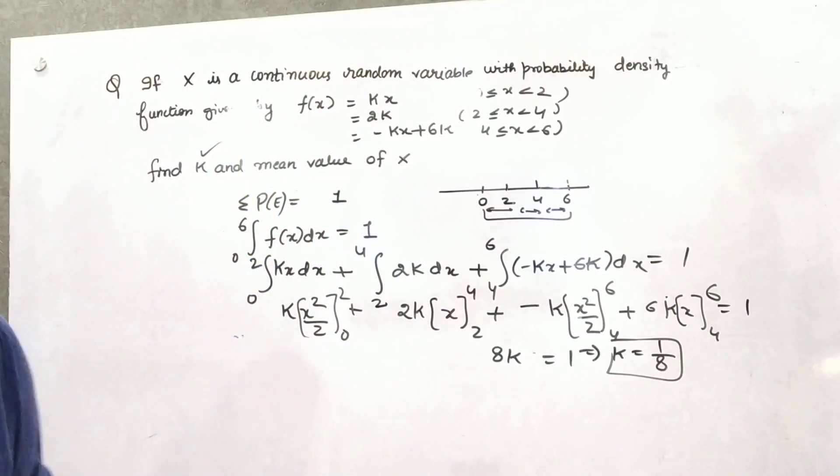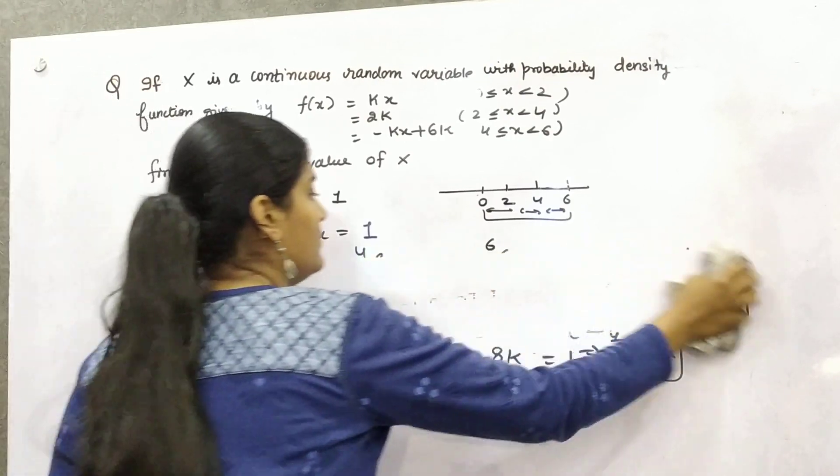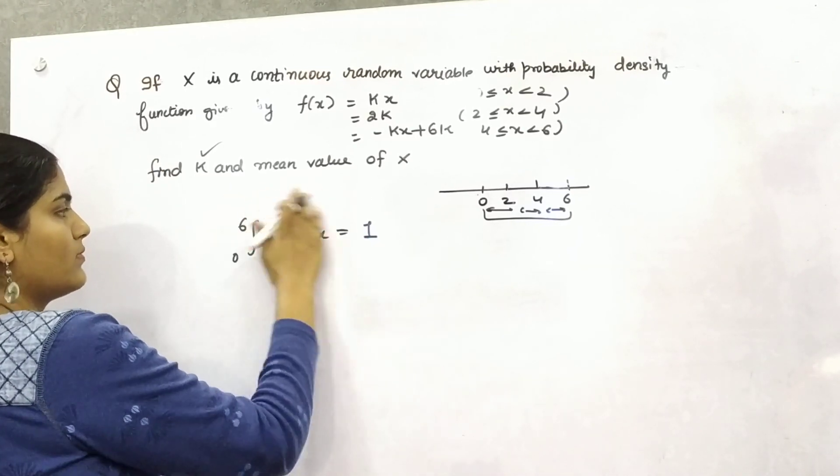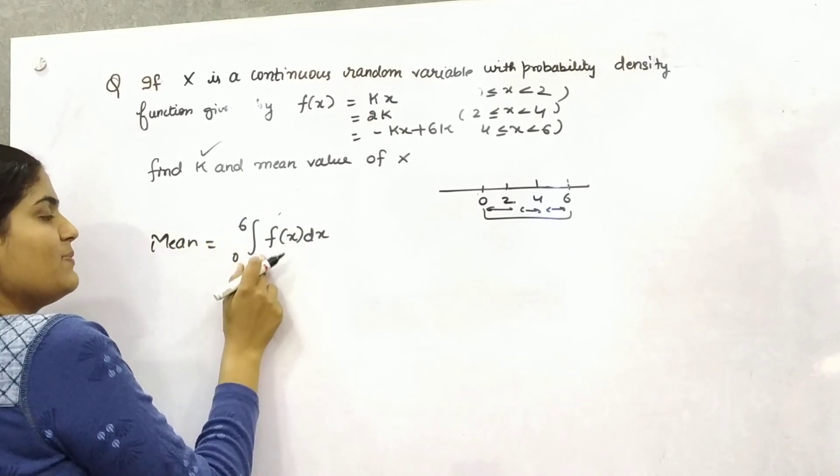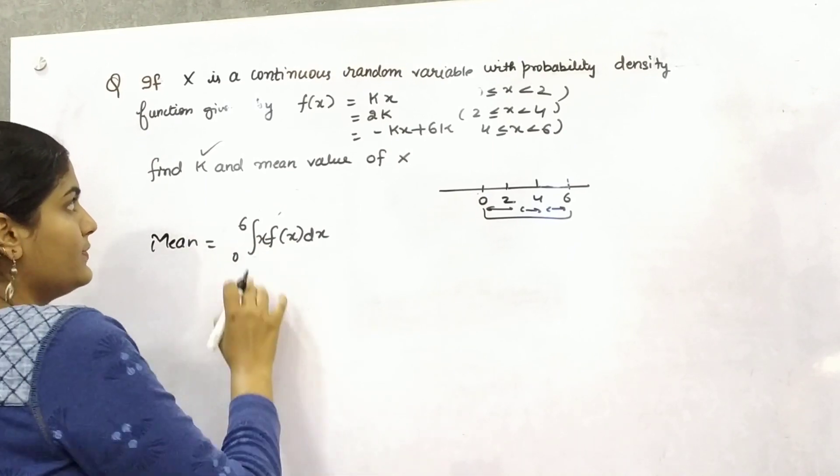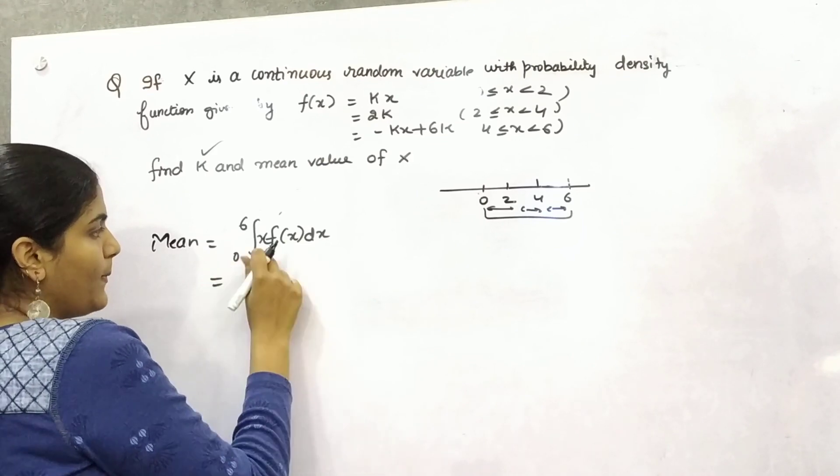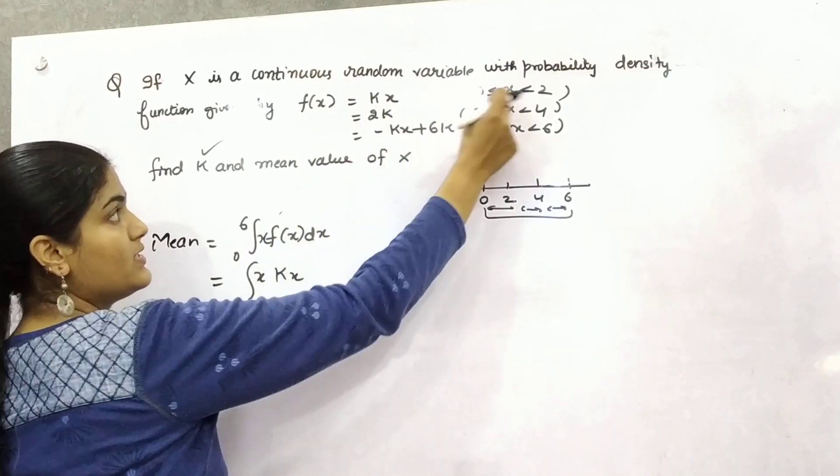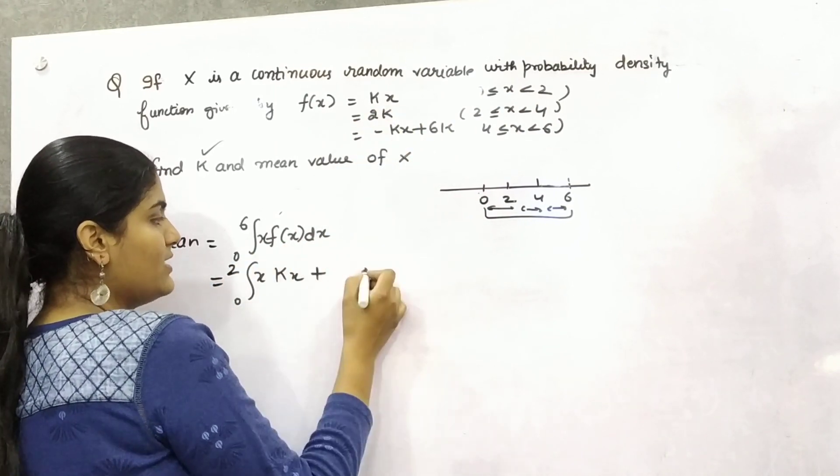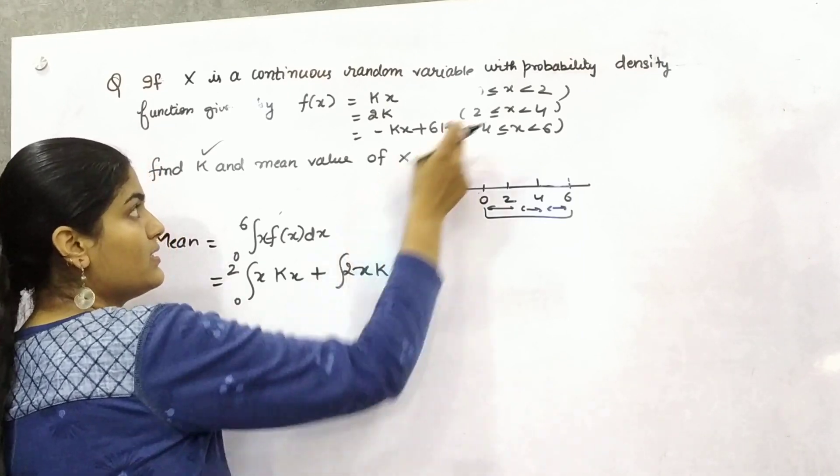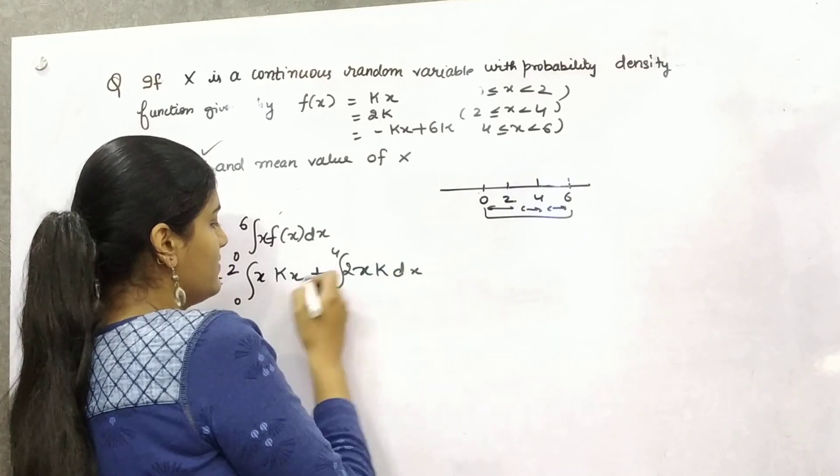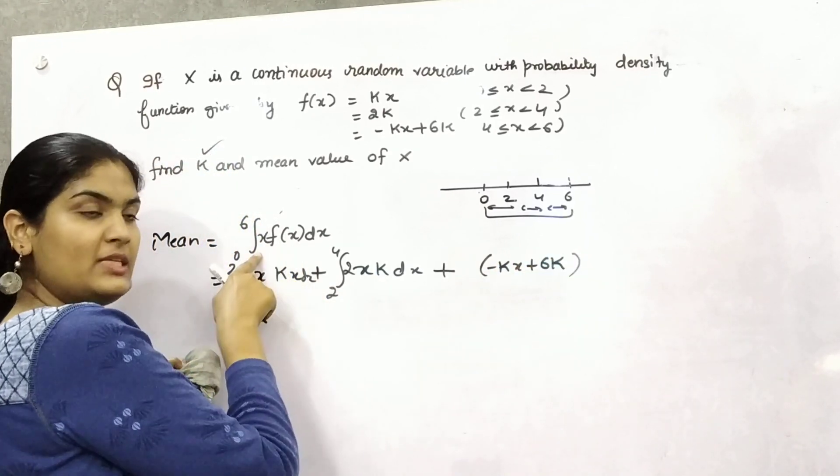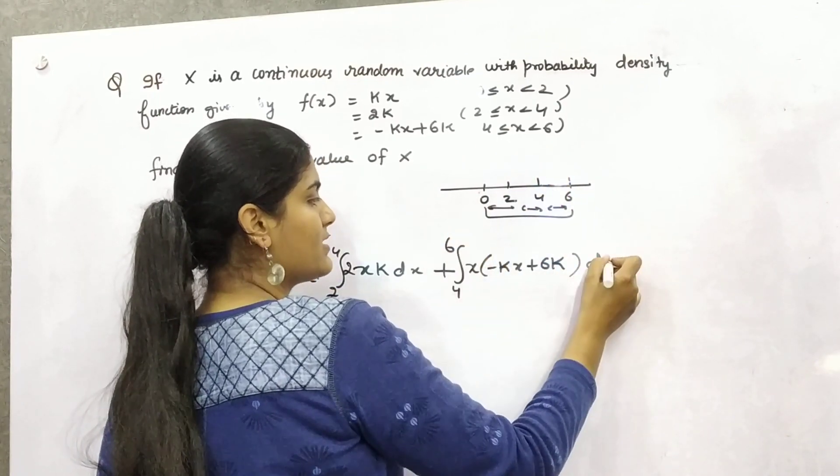So your mean value of x, for mean value, simply multiply it with x. The function, the number of values. Now again start x of kx limit 0 to 2 plus x into 2k limit 2 to 4 dx plus minus kx plus 6k, this is your function, multiply by x, limit 4 to 6 dx.